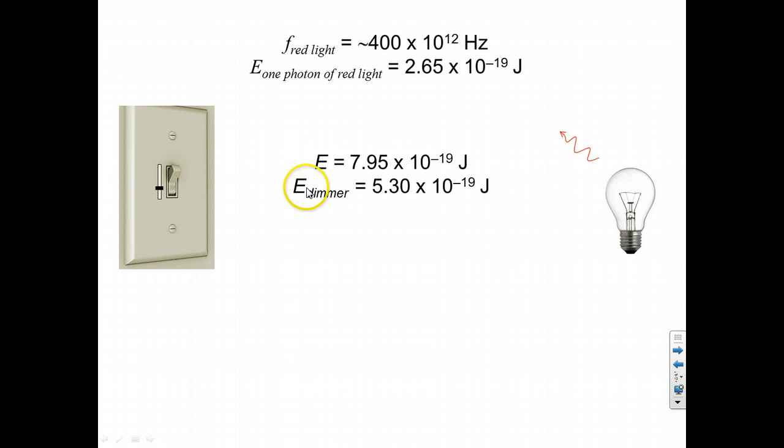And when we do that, we will lower the energy again by another 2.6 times 10 to the negative 19, 2.65 times 10 to the negative 19 joules. So this is now the new energy of this dimmer light.